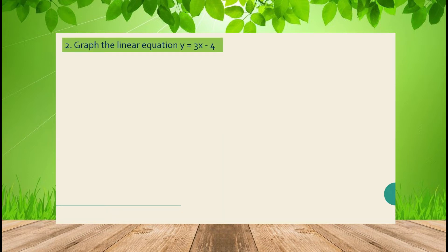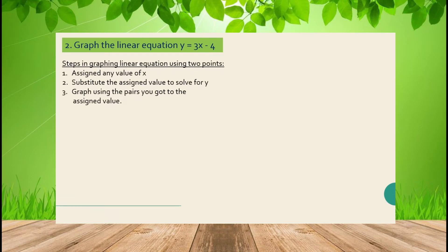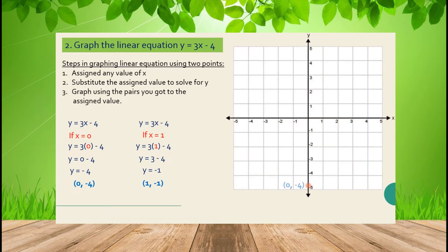Let's have another example. Graph the linear equation y = 3x - 4. Assign x = 0 and substitute: y = -4. So the first point is (0, -4). If x = 1, substitute and get y = -1, giving the second point (1, -1). Graph both points and connect them. That is the line from the equation y = 3x - 4.